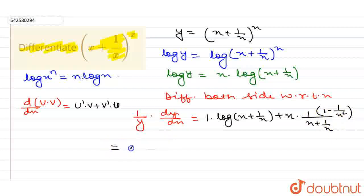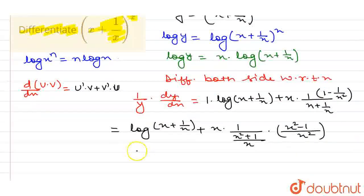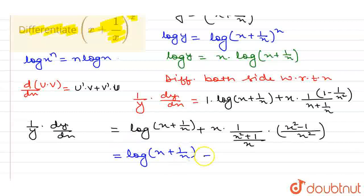So I can write: log(x + 1/x) + x · (1/(x + 1/x)) · (1 − 1/x²). Here the LCM for (x + 1/x) is x, so I can write (x² + 1)/x. For (1 − 1/x²), the LCM is x², so I can write (x² − 1)/x². On the left-hand side it is (1/y)·(dy/dx). Simplifying further: x² cancels, giving log(x + 1/x) + x² · (1/(x² + 1)) · (x² − 1)/x².